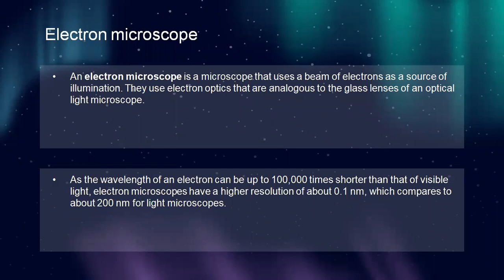What is an electron microscope? An electron microscope is a microscope that uses a beam of accelerated electrons as a source of illumination. The wavelength of an electron can be up to one hundred thousand times shorter than that of visible light photons. Electron microscopes have a higher resolving power than light microscopes and can reveal the structure of smaller objects.